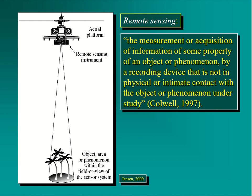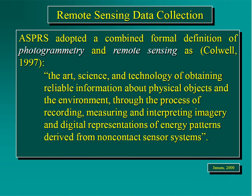Moving on to slide nine, we get into definitions of remote sensing. The first diagram comes from Jensen himself. The quote from Colwell — who I believe was with the U.S. Forest Service — defines it as: 'the measurement or acquisition of information of some property of an object or phenomenon by a recording device that is not in physical or intimate contact with the object or phenomenon under study.' Jensen also lists the ASPRS — the American Society for Photogrammetry and Remote Sensing — a professional organization whose definition is: 'the art, science, and technology of obtaining reliable information about physical objects and the environment through recording, measuring, and interpreting imagery and digital representations of energy patterns derived from non-contact sensor systems.'